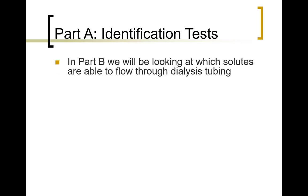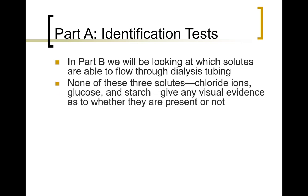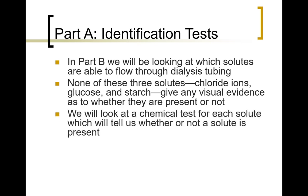In Part A, we're going to look at ways of identifying various chemical species used throughout the remainder of the experiment. In Part B, we'll have a solution containing three different solutes: chloride ions, glucose, and starch. The problem is that when dissolved in water, these don't give good visual evidence of their presence — they don't change the color of the solution, they're not solid, and starch only makes the solution cloudy when quite concentrated. So we need chemical tests that tell us whether or not each chemical is actually present in a particular solution.